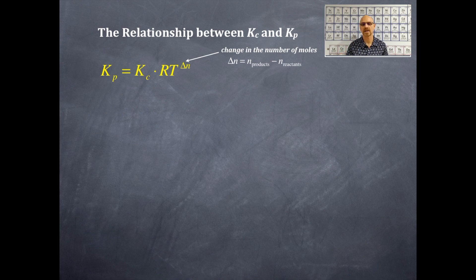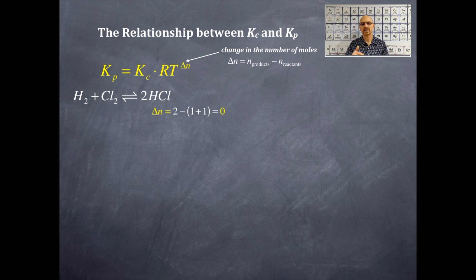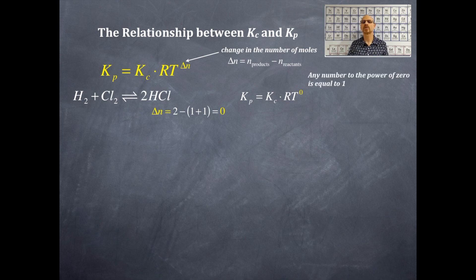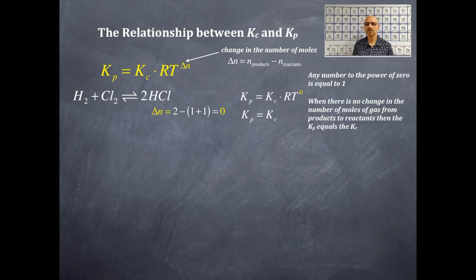So there's our relationship between Kp and Kc — products minus reactants for ΔN. Example one: H₂ + Cl₂ → 2HCl. The change in moles is products (2) minus reactants (1 + 1) = 0. Therefore KP = KC × RT to the 0 power, and anything to the power of 0 equals 1, so KP = KC. The only time KP and KC are the same is when ΔN = 0.